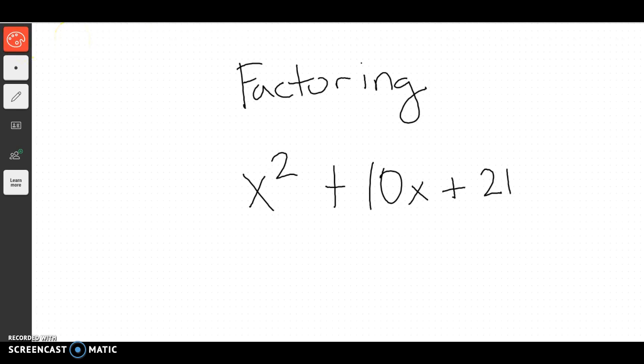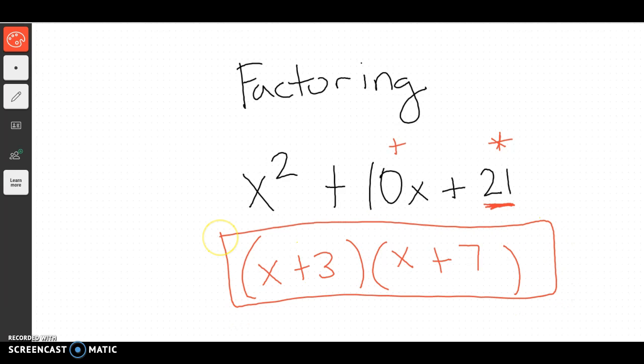A trinomial is going to break up into two binomials, one which will be like x and x for the front, because x times x gives me x squared. Then we thought about what would multiply together to give us this, but add together to give us this. The numbers that would make that work would be 3 and 7, and that would be my answer.